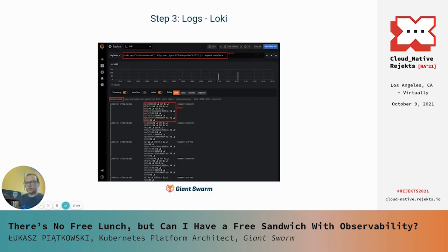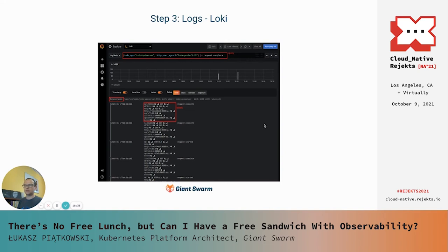Next step: logs. Because we configured Loki with PromTail to extract data from plain text log files into labels, we can do a query asking about the API server. While we're not really interested in queries coming from kube-probe — because those are just health checks — we try to check all entries around request-complete entries. Unfortunately, in this specific case, this is not really helpful. We can see a lot of data about the agent and client agent, but going through logs here is not really useful for us. We cannot learn much about the source of the problem from the distributed logs.